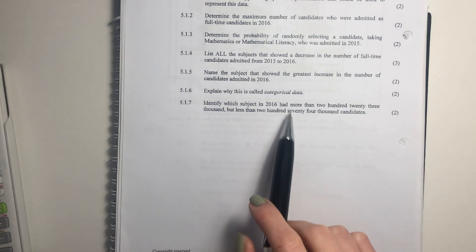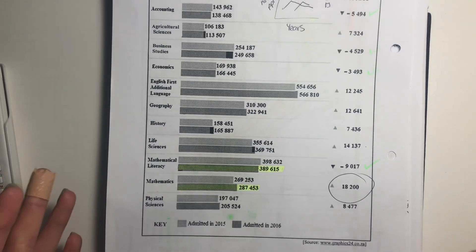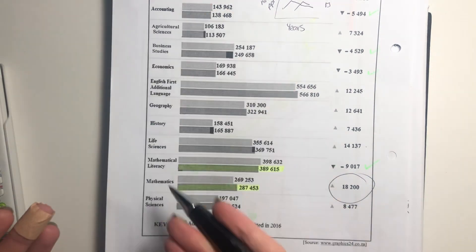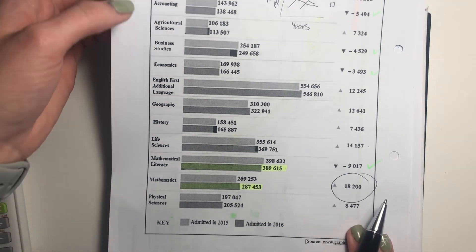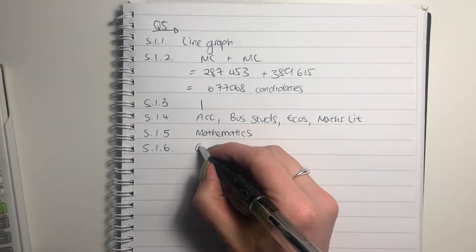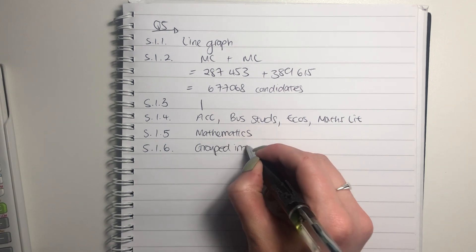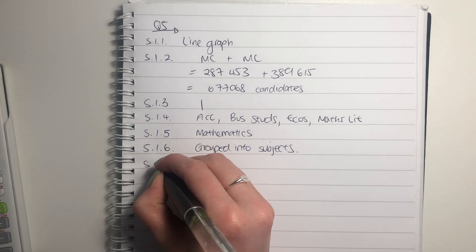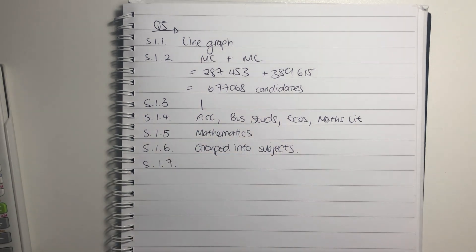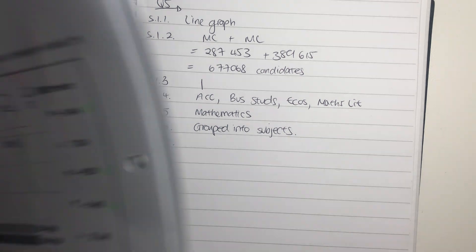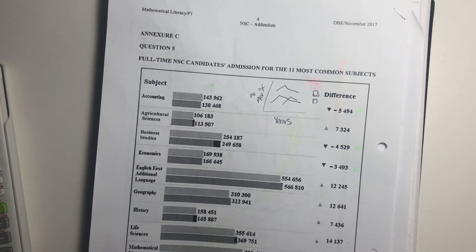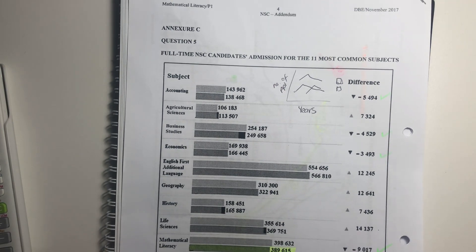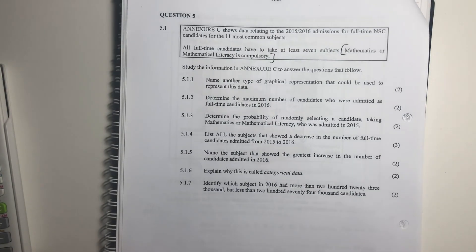So explain why this is called categorical data. What do we know about categorical data? It's grouped, and here we're grouped into subjects, and therefore it's categorical. So you can just say it's categorical because it is grouped into subjects. You'll see that in a lot of these questions, this paper was very definition-heavy in the sense that you had to know your terminology. Don't forget to learn your terminology because you don't want to lose marks for things like that.